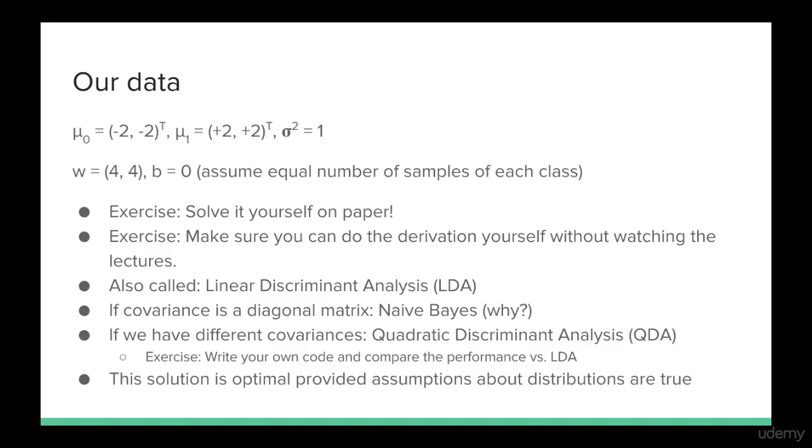In our coding examples, we are going to use two gaussians. One centered at minus two minus two, and one centered at plus two plus two. The variance of each dimension will be one, and each dimension will be independent. So any off diagonals in the covariance would be zero.